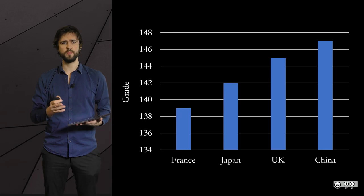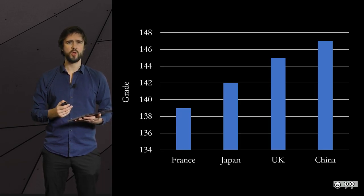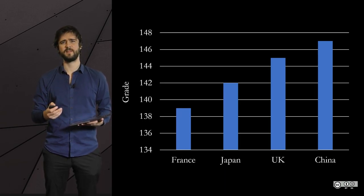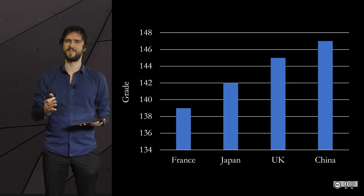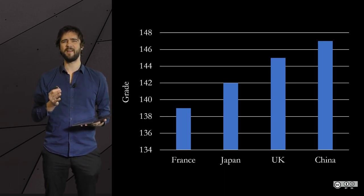Some data visualizations can be intentionally misleading, and it can prove useful to know the most common tricks. Let's start with a classic: truncating the axes. Let's take a graph called a bar plot. For instance, the goal would be to show differences in grades in standardized tests, like PISA, among different groups like students from diverse countries. If I show you this plot,